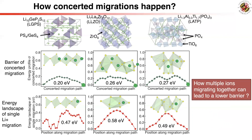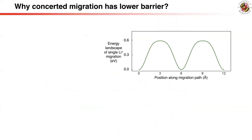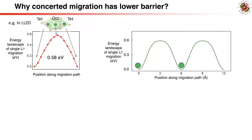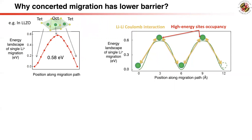The question is: why does migration of multiple ions have a lower barrier than single-ion hopping? To understand why concerted migration has a lower barrier, we construct a simple physical model with an energy barrier of 0.6 eV involving multiple lithium ions. This model mimics the real superionic conductor LLZO, where lithium occupies both low-energy tetrahedral sites and high-energy octahedral sites. Coulombic interactions are added between lithium ions, so lithium can stabilize at the high-energy sites of the landscape, giving a similar ion sublattice configuration as in the superionic conductors.